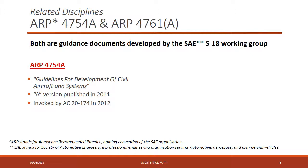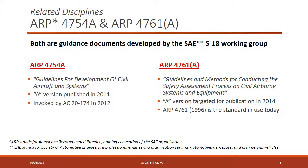ARP 4754A is titled 'Guidelines for Development of Civil Aircraft and Systems' — this is where systems development guidance comes from. The A version was published at the end of 2011 and invoked by AC 21-74 in September 2012. ARP 4761, titled 'Guidelines and Methods for Conducting the Safety Assessment Process on Civil Airborne Systems and Equipment,' is currently in revision. The existing version dates from 1996, and if you've ever wondered where Design Assurance Levels come from, they originate from the safety analysis processes in ARP 4761.